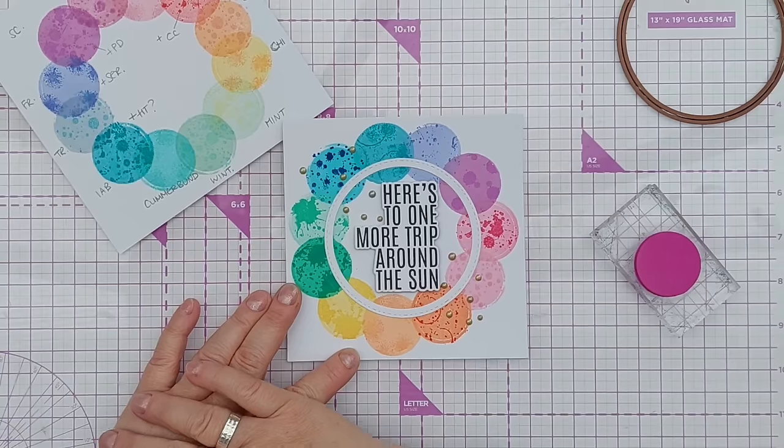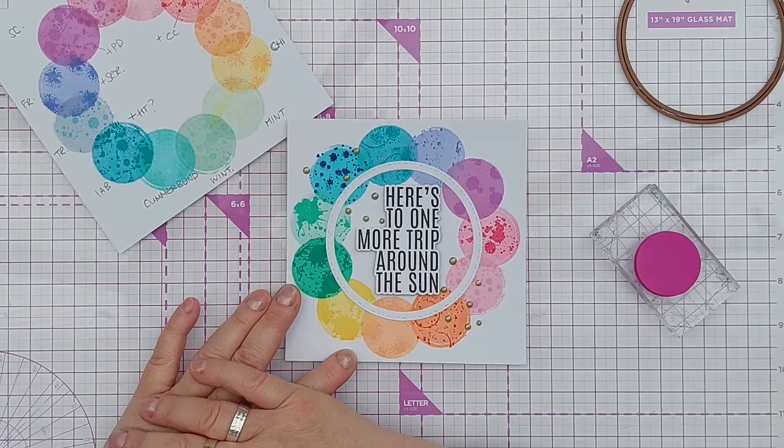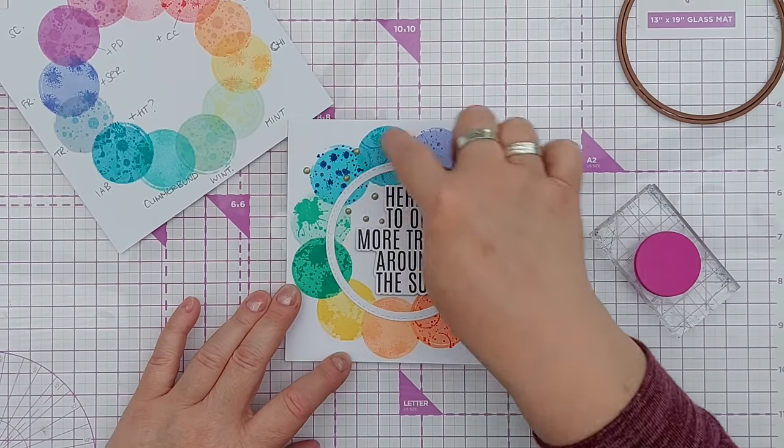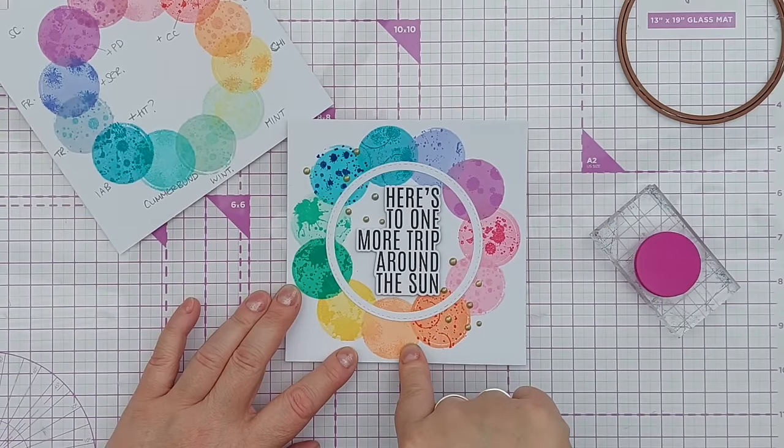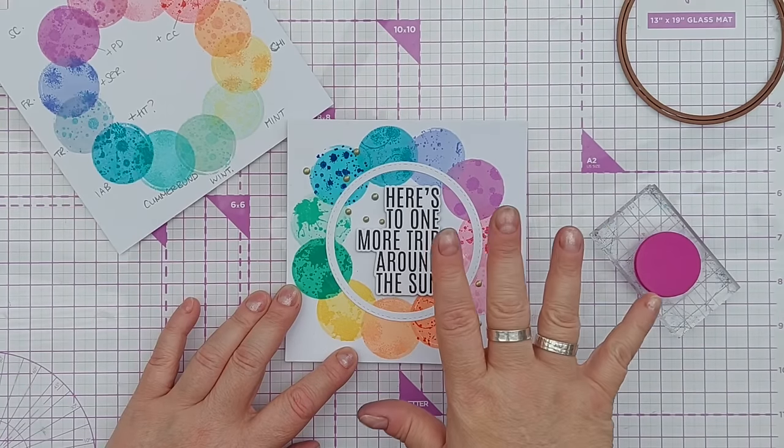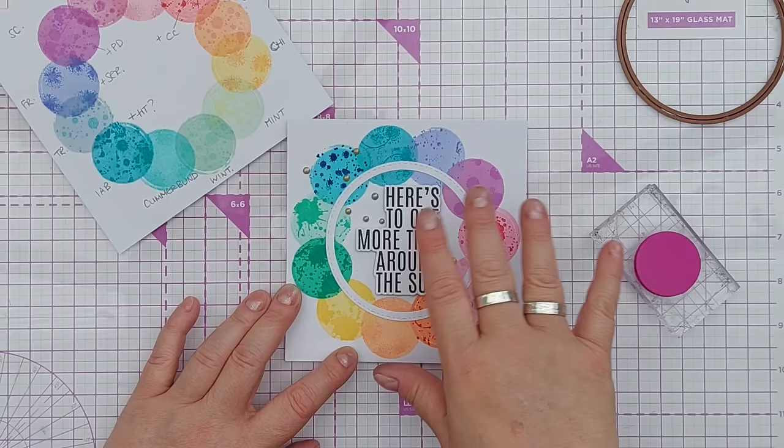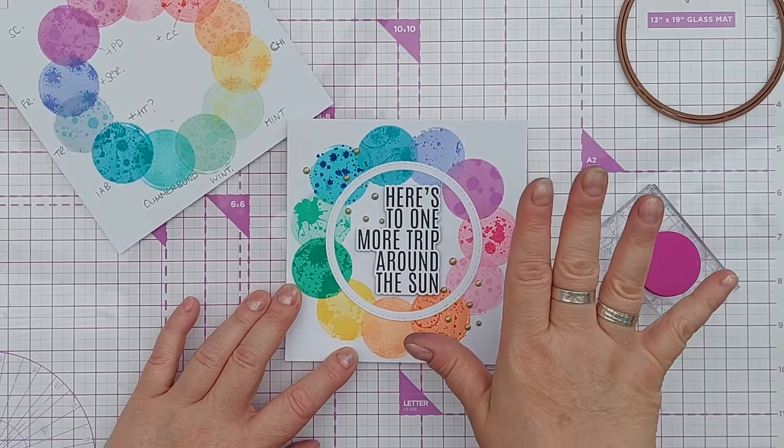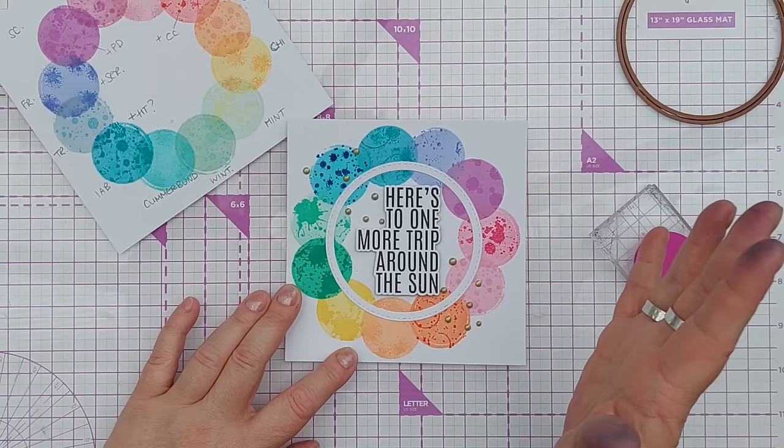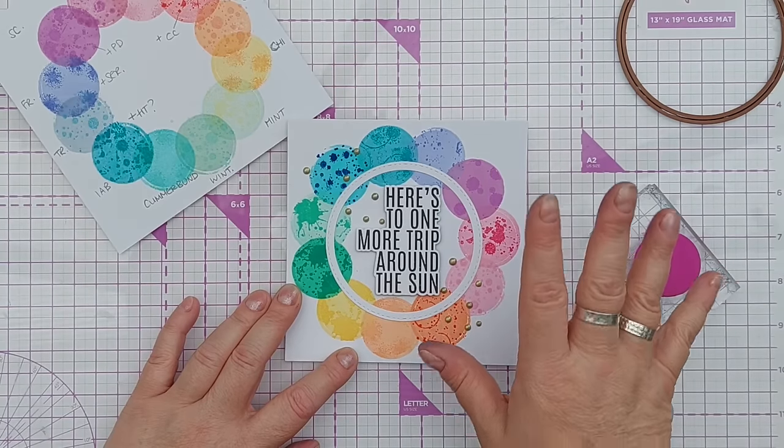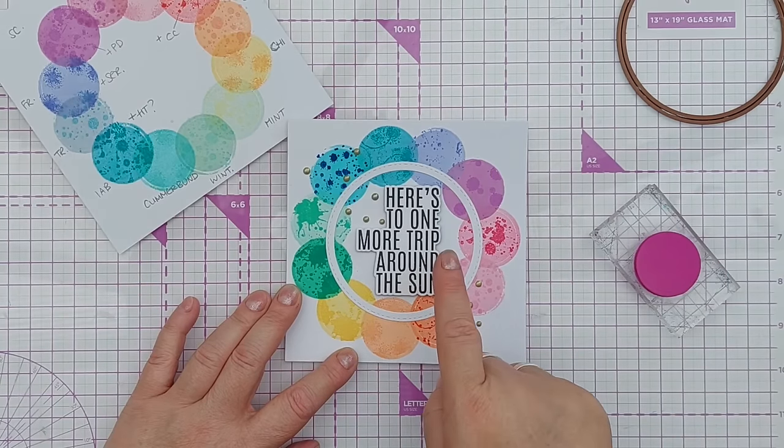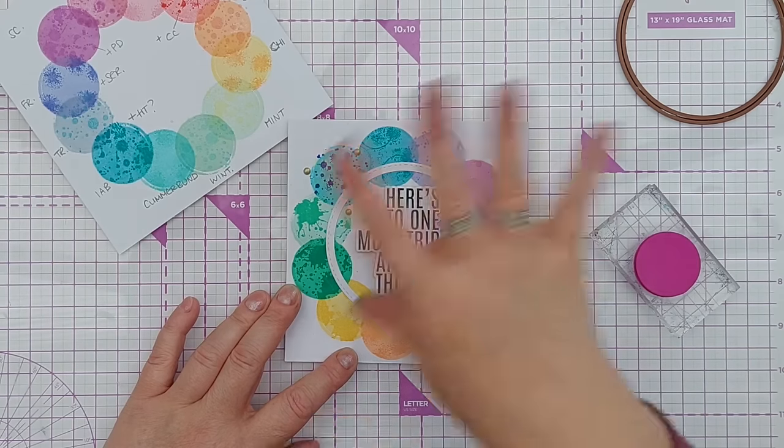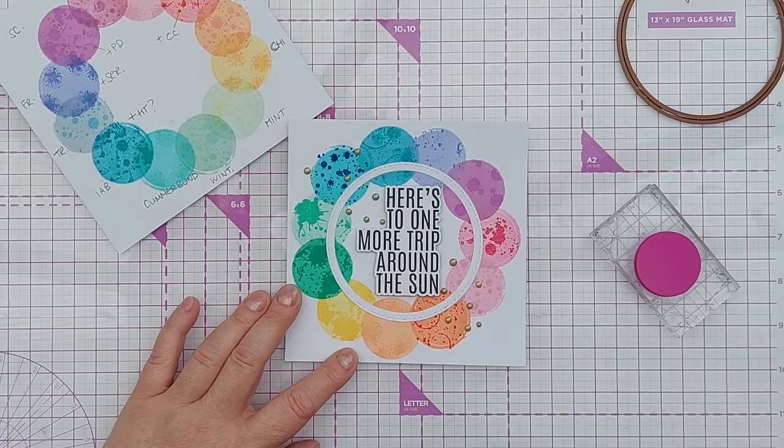Then I thought to myself actually wouldn't it be good if I could get 12 circles around the outside. I know we don't have 12 planets in the solar system, it used to be nine maybe eight, but then I thought let's get 12 around the outside, one for each month of the year because it's one more trip around the sun, a whole year. I put that to one side and left it overnight.